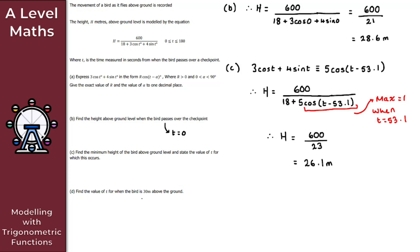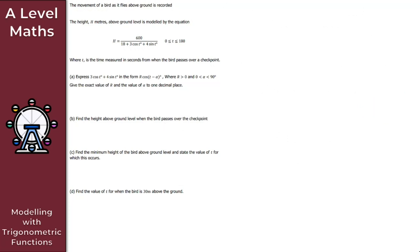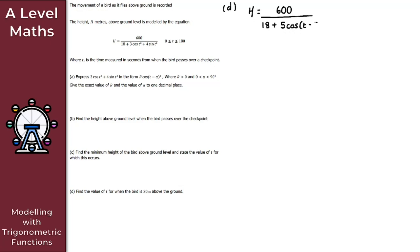Now for the final part, part D. We need to find the value of T when the bird is 30 meters above the ground. Using the modified form from part A: H = 600 / (18 + 5cos(T − 53.1°)).